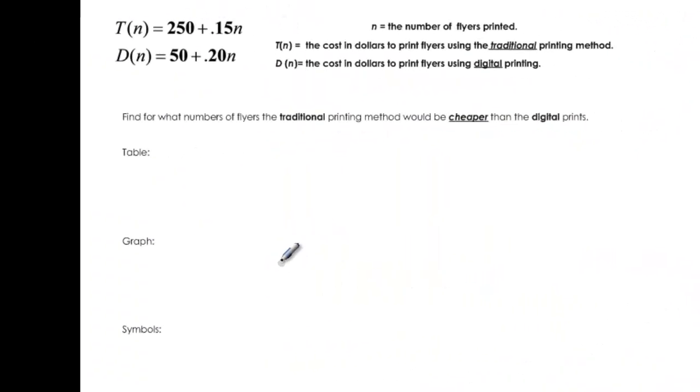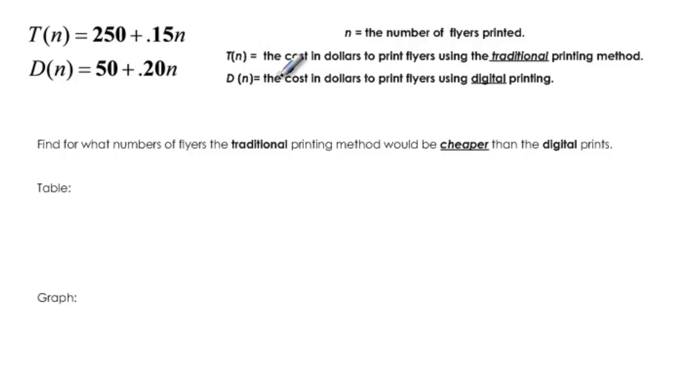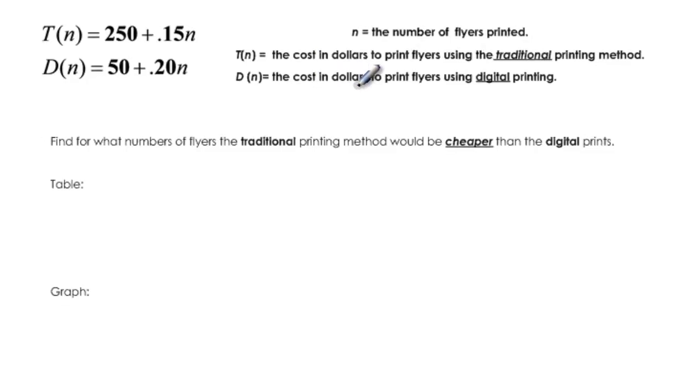So let's talk about a model using inequalities. So we have these two equations here. One is for the cost of printing flyers by traditional methods and one is for cost of printing flyers using digital printing. And we want to know when traditional will be cheaper than digital. In other words when t of n is going to be less than d of n. That's where we're headed.